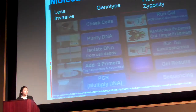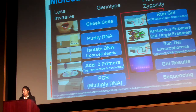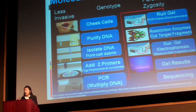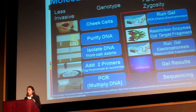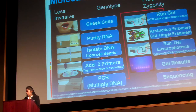Here is a flowchart of the molecular analysis procedure. I first extracted cheek cells from my subject and purified the DNA by isolating it from cell debris. I then added two primers marking the beginning and end of the ABO gene and multiplied it via PCR, or polymerase chain reaction. I then ran a gel electrophoresis to confirm PCR had worked, added a restriction enzyme that cut the ABO gene at a target fragment, and ran a final gel to get my results.